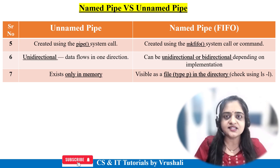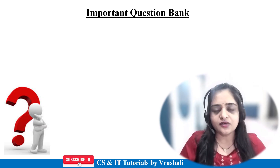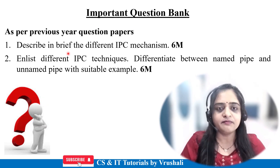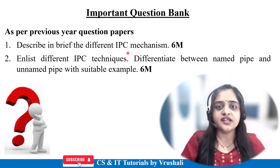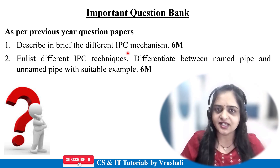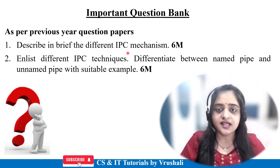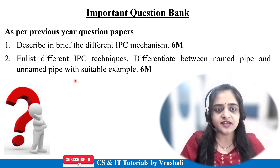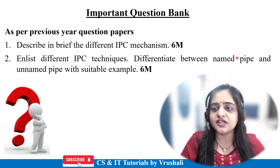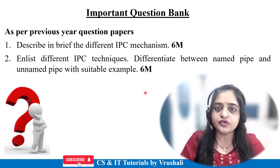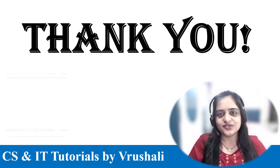You should prepare this comparison completely. From previous year question papers, questions have been asked like: describe briefly the different IPC mechanisms — here you need to explain shared memory, message queue, and pipe with small examples and diagrams for 6 marks. Another question is: enlist different IPC techniques, and also: explain the difference between named pipe and unnamed pipe with a suitable example for 6 marks. You must compulsory prepare these questions.